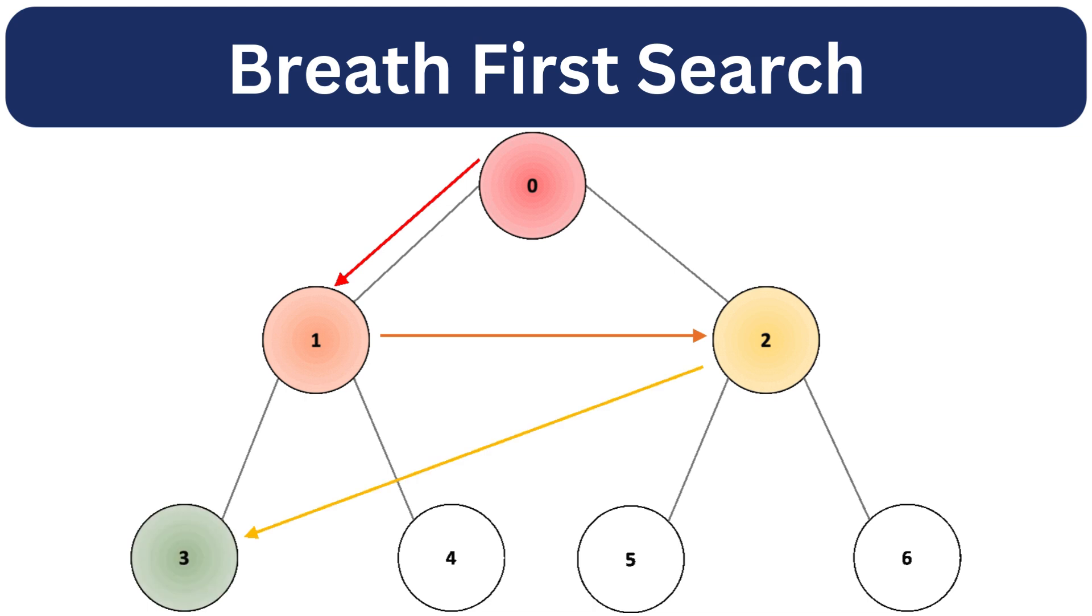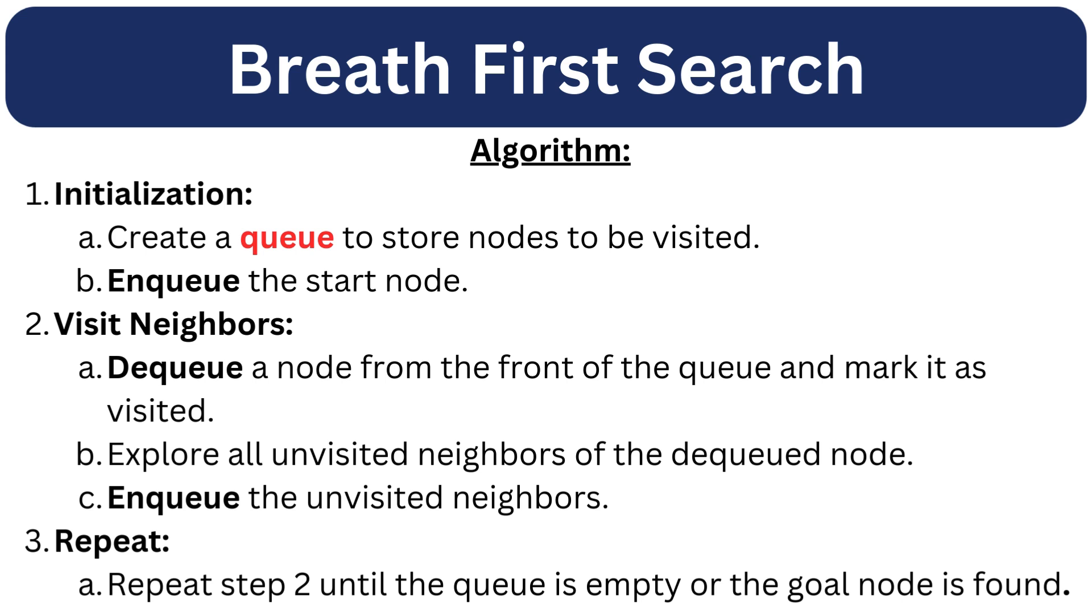Breadth-first search explores the graph level by level. It starts with the source node and visits all its immediate neighbors before moving to the next level of neighbors. Here is the algorithm. First step is initialization. BFS uses a queue data structure to store the nodes to be visited. Enqueue the start node.